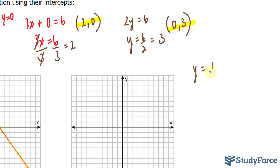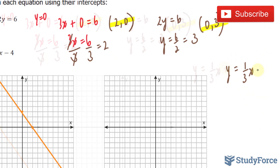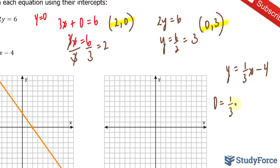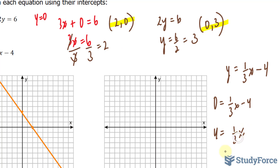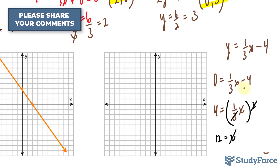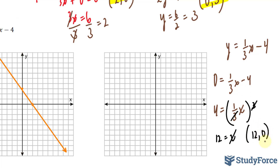So we have y equals one-third x minus 4. Setting y equal to 0 gives me 0 equals one-third x minus 4. Bringing the minus 4 over, I have 4 equals one-third x. To solve for x, I'll multiply both sides by 3. This 3 and this 3 cancels out, and 4 times 3 is 12. So x equals 12, and my first intercept will be at (12, 0).